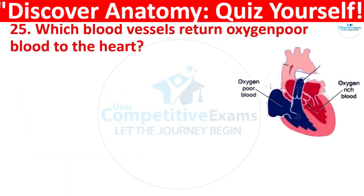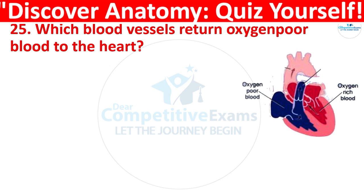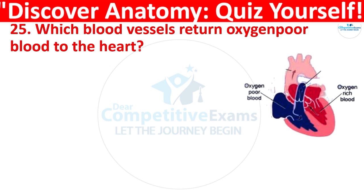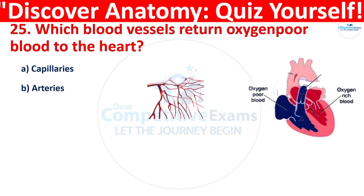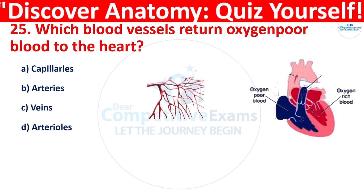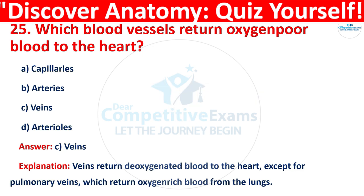Question 25: Which blood vessels return oxygen-poor blood to the heart? Your options are: capillaries, arteries, veins, or arterioles. The correct answer is C, that is veins. Veins return deoxygenated blood to the heart, except for pulmonary veins, which return oxygen-rich blood from the lungs.